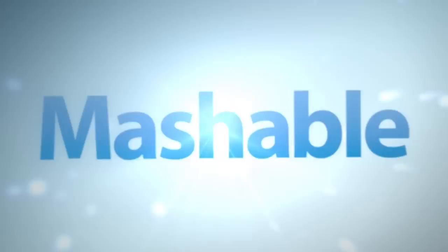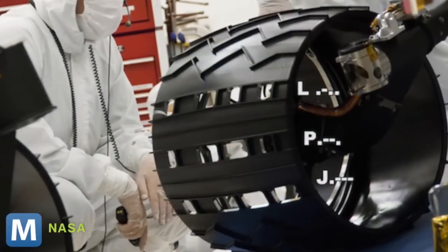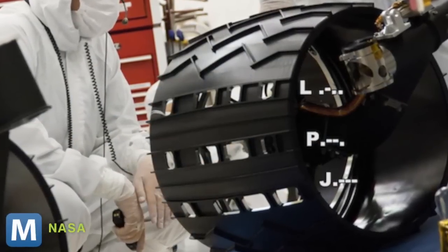Those big wheels are special because Curiosity didn't have a landing platform like earlier rovers. The scientists and engineers got to have a little fun. These gaps on the wheels spell out Morse code JPL for NASA's Jet Propulsion Laboratory.